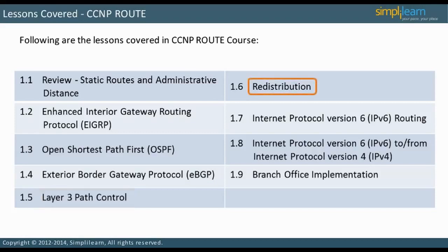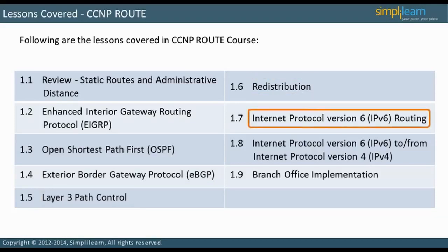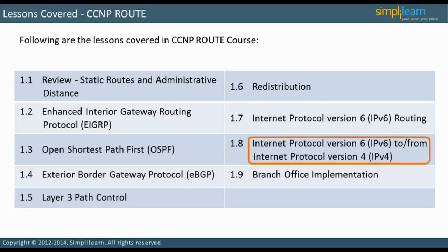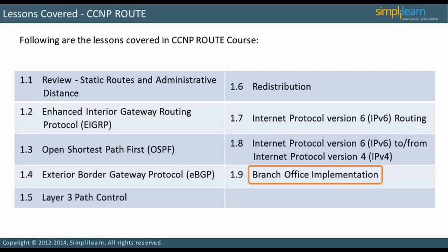Next is a discussion of various Layer 3 Path Control Tools, then the important topic of redistribution. We take a detailed look at IPv6 routing and interchange between IPv6 and IPv4. Finally, the course is capped off with a practical discussion of branch office implementation.